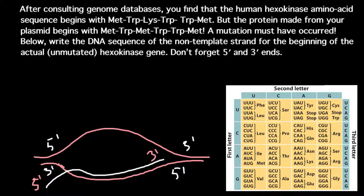For example, our first amino acid would be methionine. We look at our codon table, and on the messenger RNA we would have the sequence A, U, G. On the non-template strand of the DNA, the sequence is the same, but instead of uracil we would have thymine — so A, T, G. On the template strand of the DNA, adenine base pairs with thymine, uracil base pairs with adenine, and guanine base pairs with cytosine.